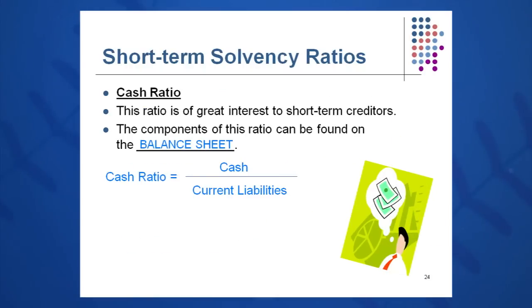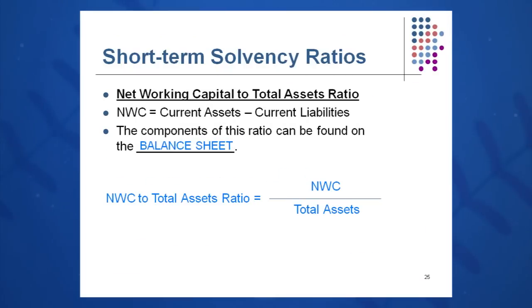The cash ratio is less used, but certainly in some companies very, very important. I take cash to current liabilities — it looks at our ability to pay our bills. Do we have enough cash to pay our short-term liabilities rapidly? Net working capital to total assets: net working capital is current assets minus current liabilities, divided by total assets. This ratio looks at what percentage of our total assets are tied up in net working capital. All of this information comes from the balance sheet.